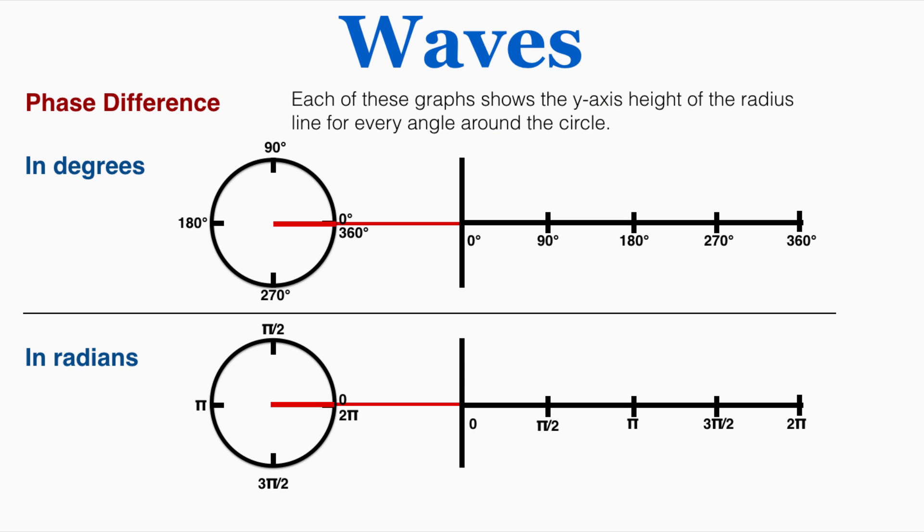So each of these graphs can show the y-axis height of the radius line for every angle around the circle. So I'm just going to make a graph of the vertical height of the radius line as it goes around the circle, and the x-axis again will have those angles on it in both degrees and radians.